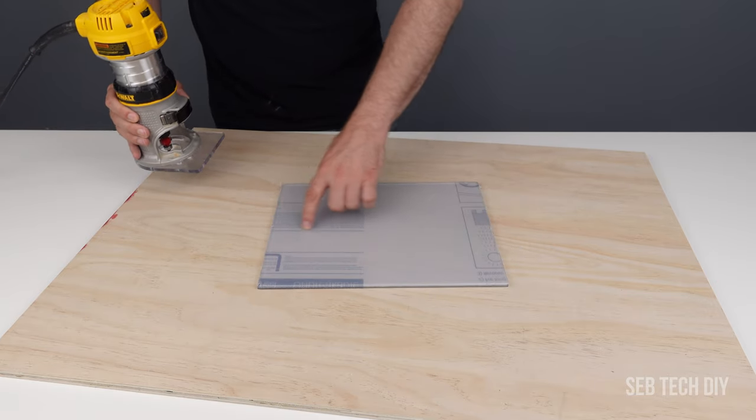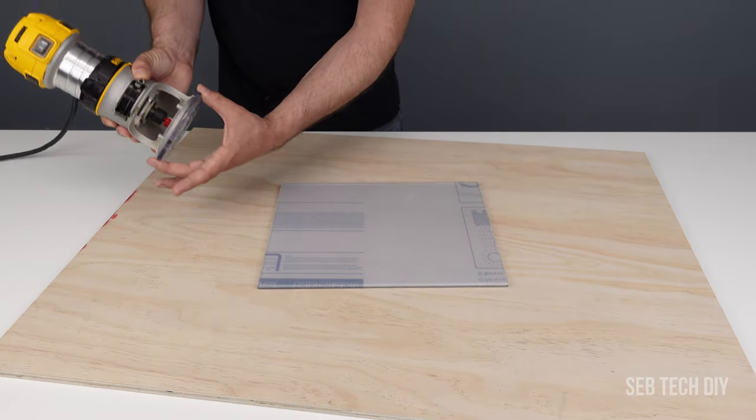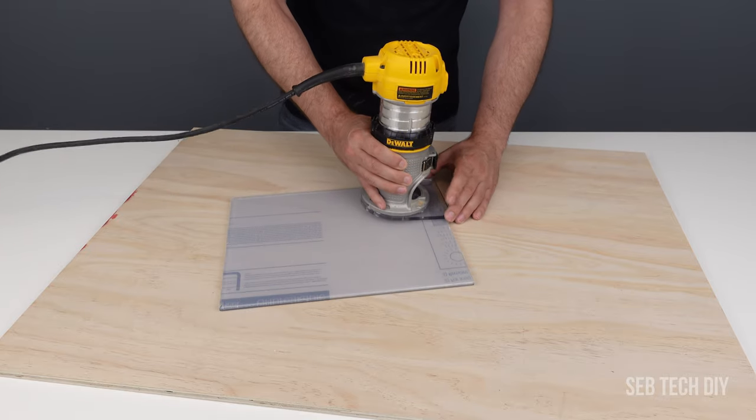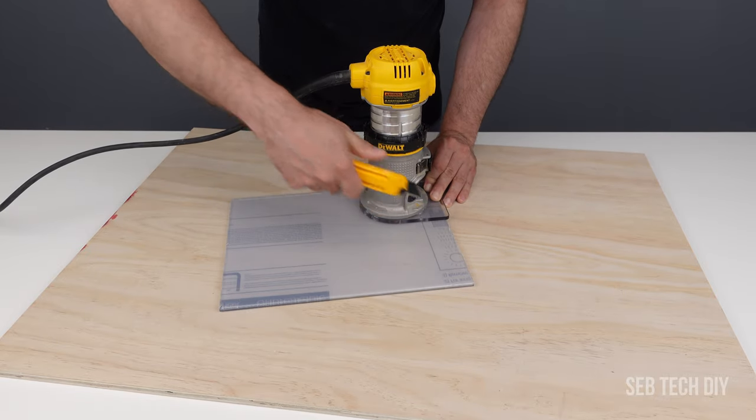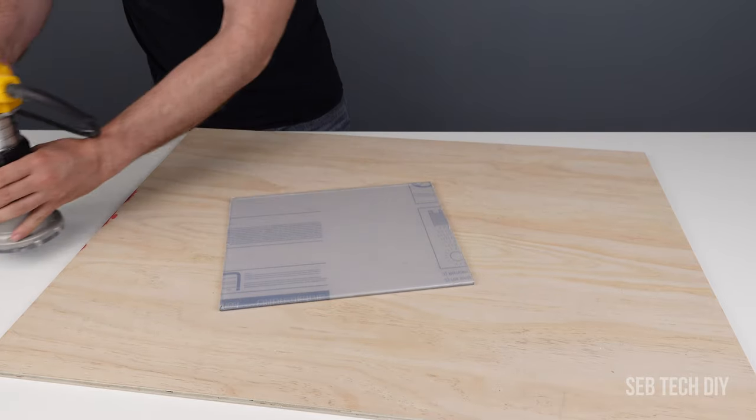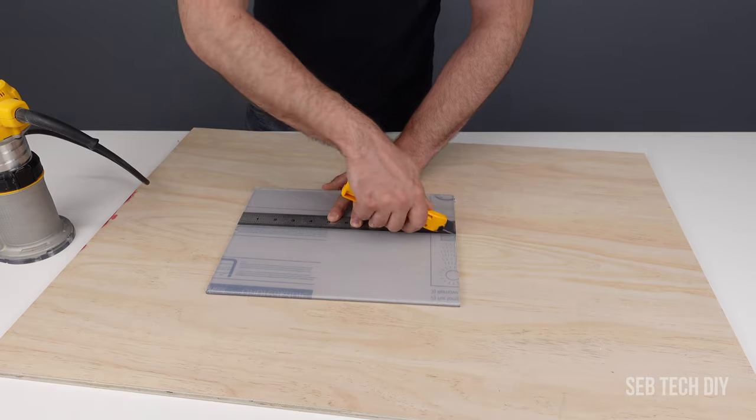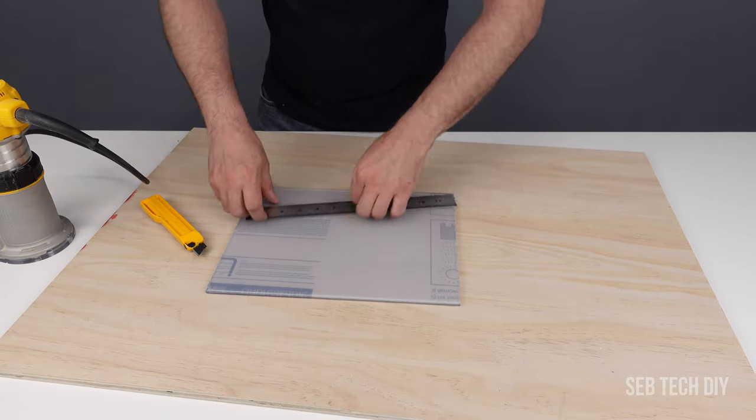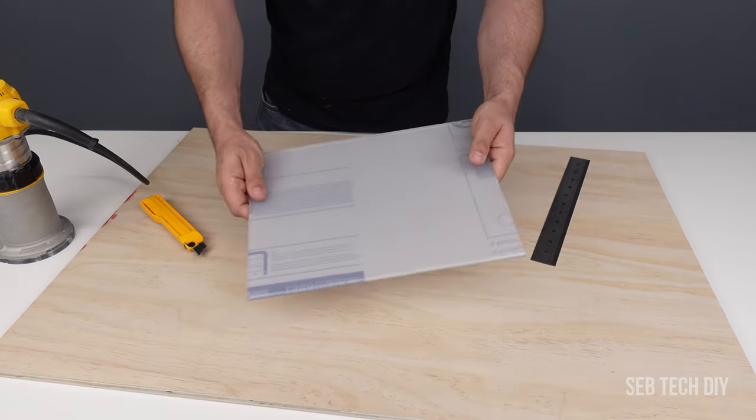The jig needs to be the same width as the clear lexan base on my router, and the best way to mark plexiglass is using a utility knife because it's precise and my pencil doesn't work on plastic. I then use a ruler to make a line between those two marks and once it's done I'm ready to cut that lexan sheet.